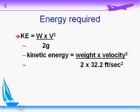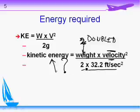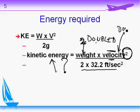If we doubled the weight, everything else stays the same, so kinetic energy would double. But here's where you have to watch out: the velocity is getting squared. So if we doubled the velocity, we'd square it, and kinetic energy would go up by a factor of 4. We doubled the velocity, but the energy it took to do that went up by a factor of 4.